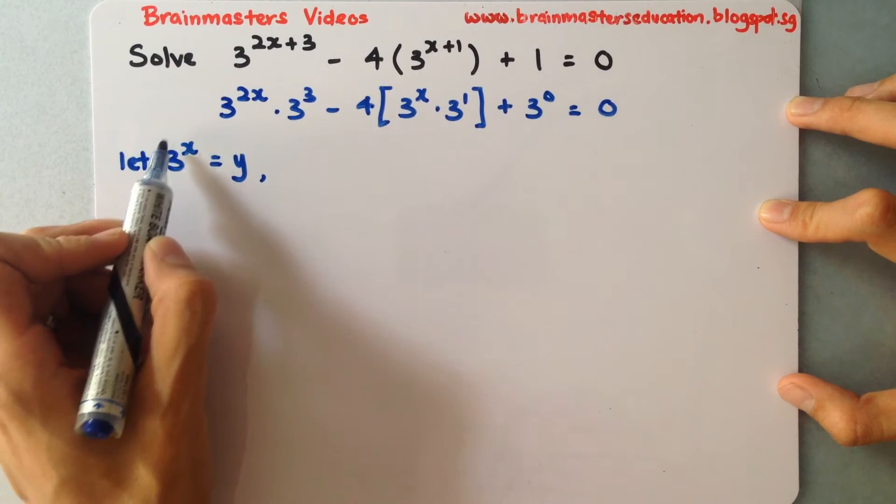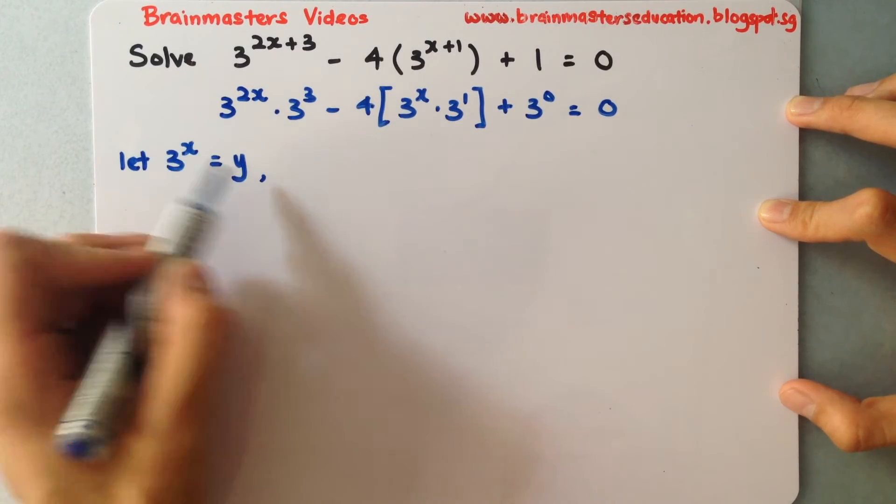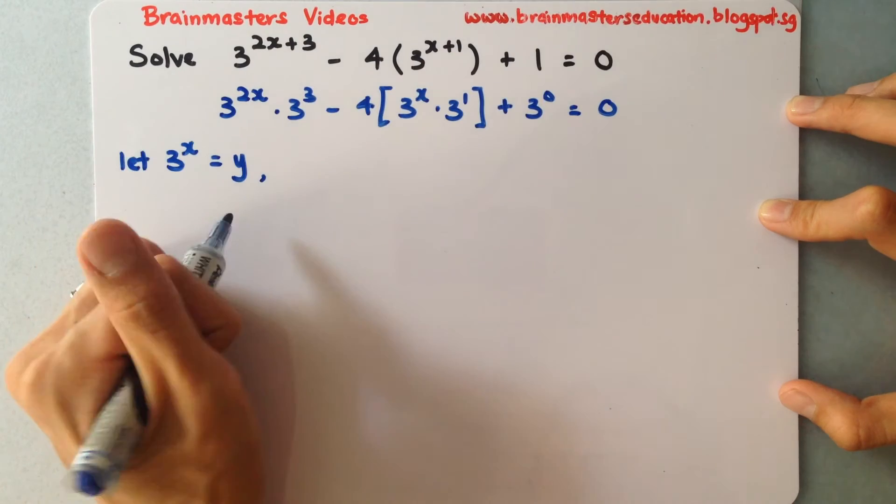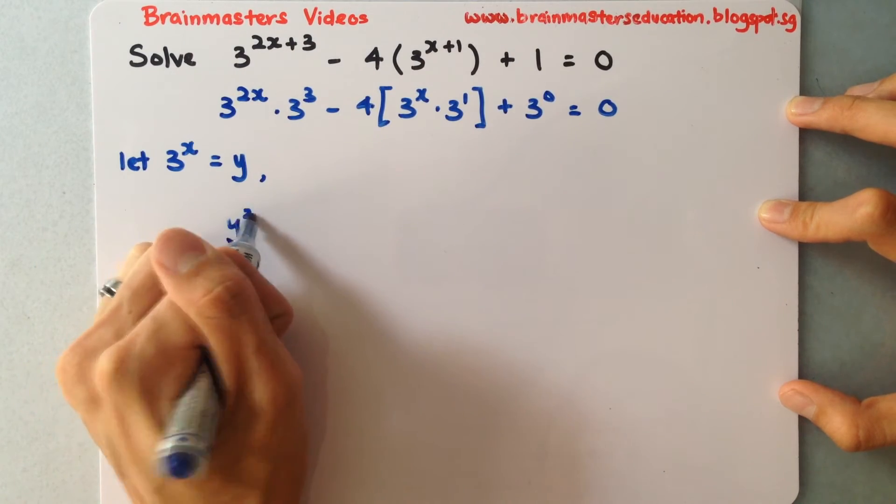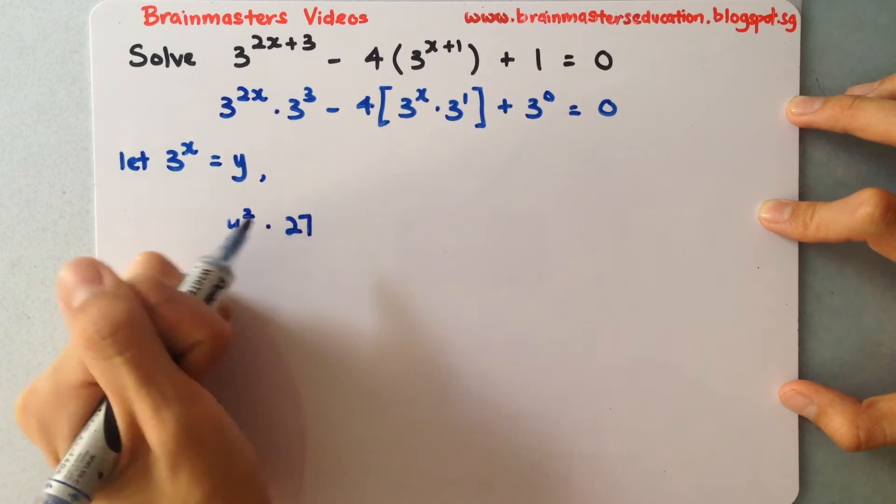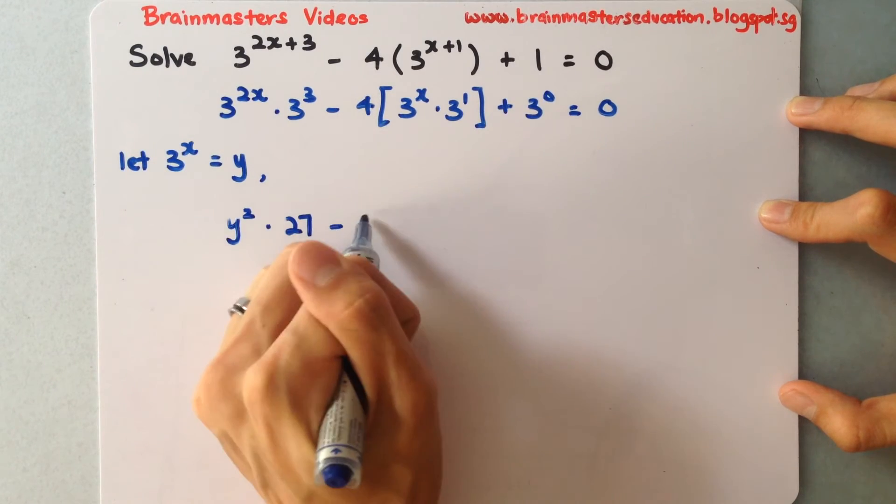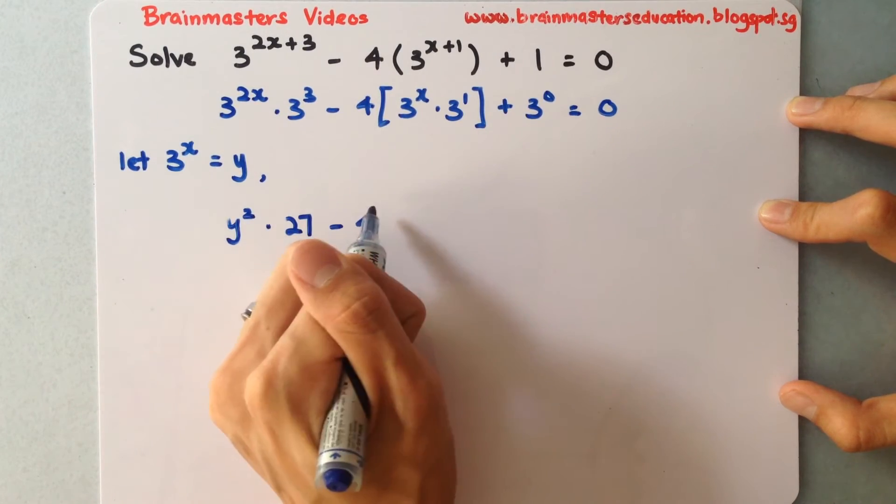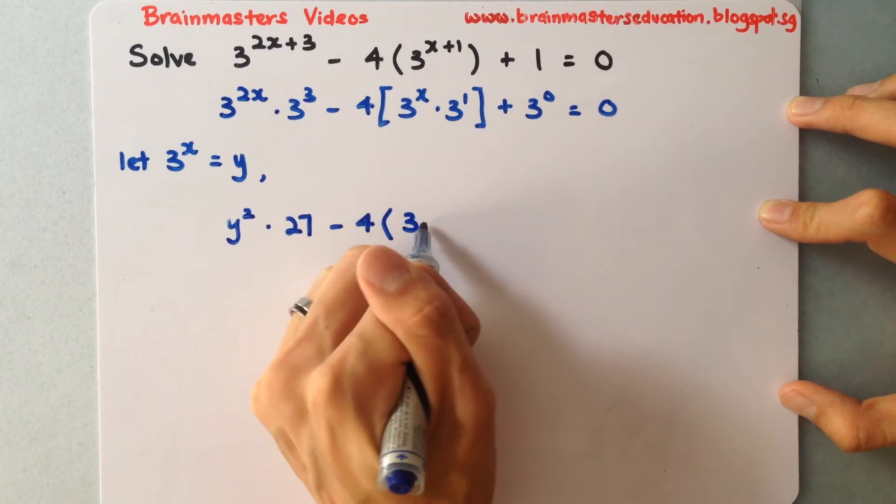Whenever I see 3 to the power of x, I will change it to y. So this gives me y squared multiplied by 27. Now simplify, with 4 times...